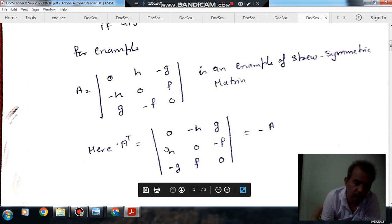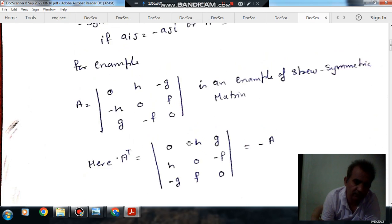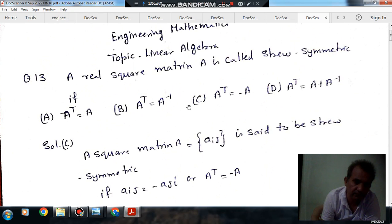So this is the transpose of this matrix, and this is equal to minus A, because if we change the sign of each element, then we get transpose. So, answer is option C.